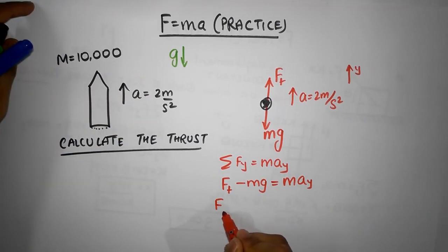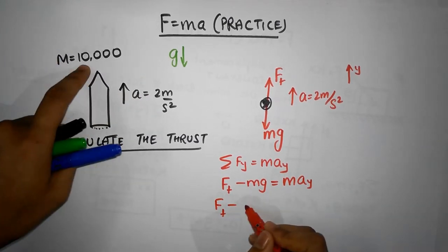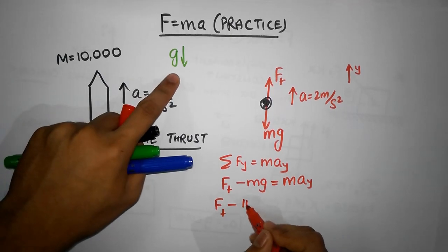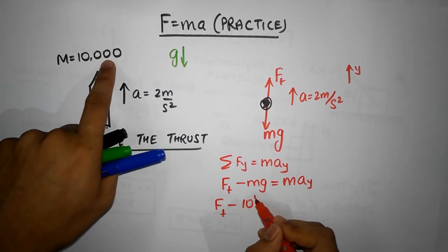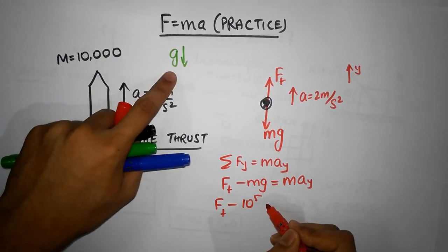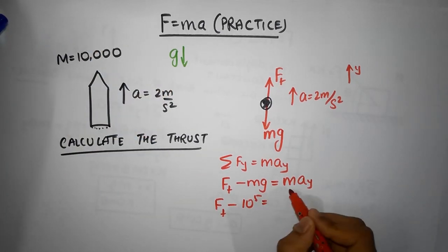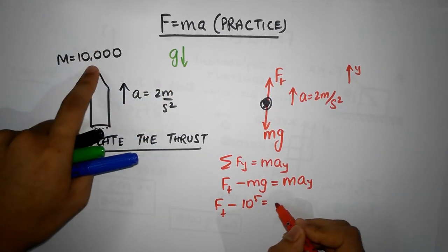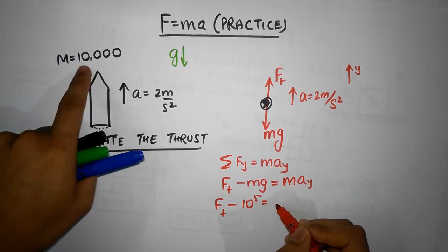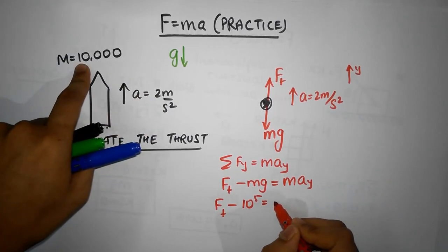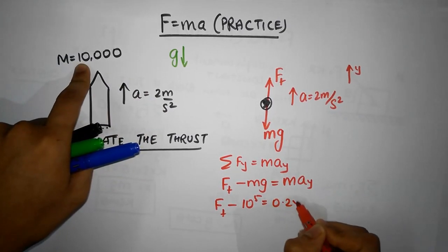Thrust force minus mg equals ma. Ft minus 10 to the power of 5... 10,000 times g gives you 10 to the power of 5. Notice that it's four zeros and there's another zero, that's 10 to the power of 5. Plus mass which is 10 to the power of 4 times the acceleration, that's 2 into 10 to the power of 4, or that's 0.2 into 10 to the power of 5.